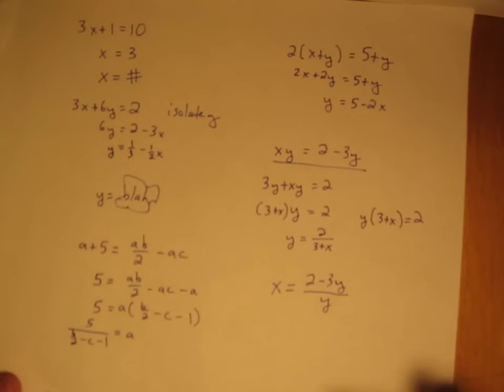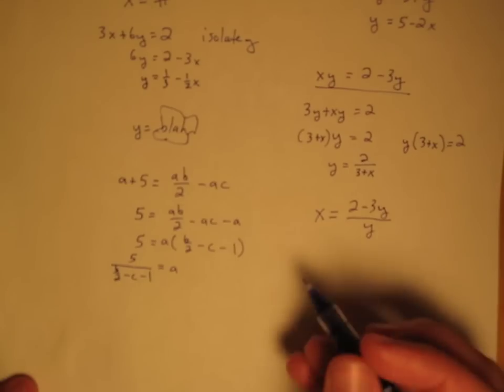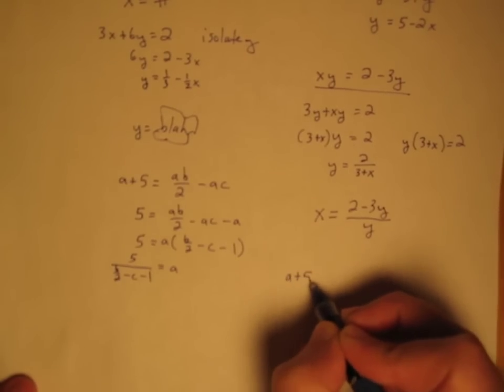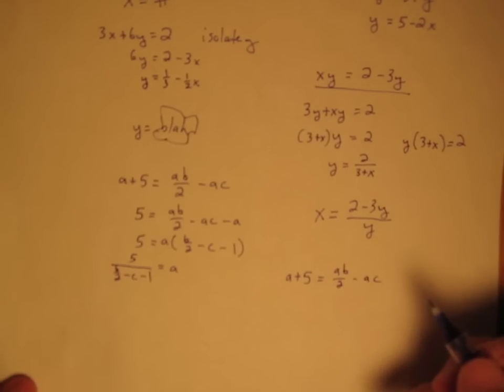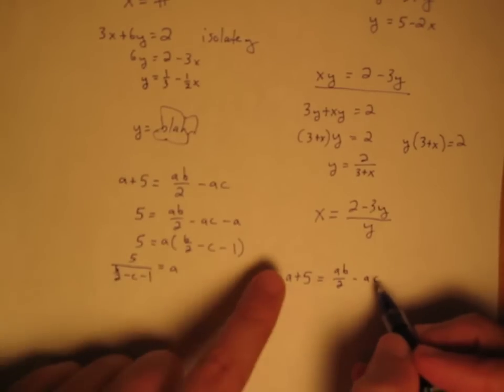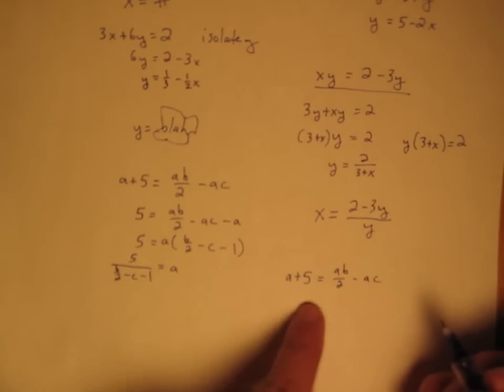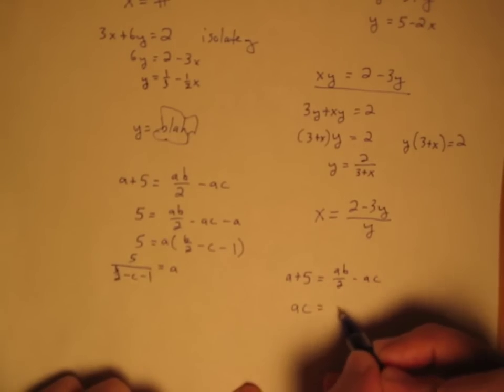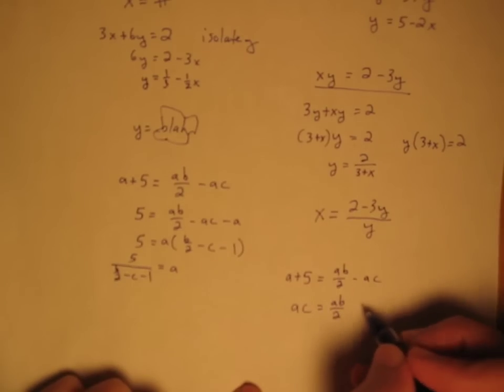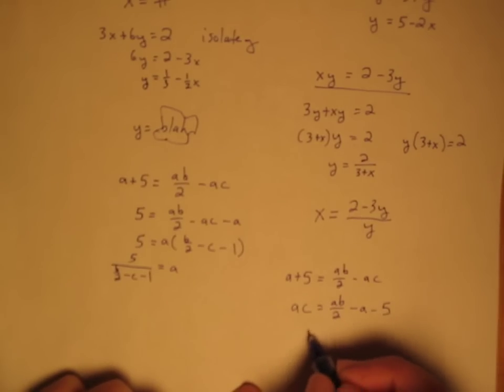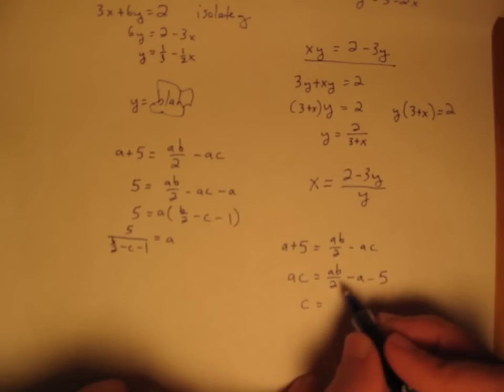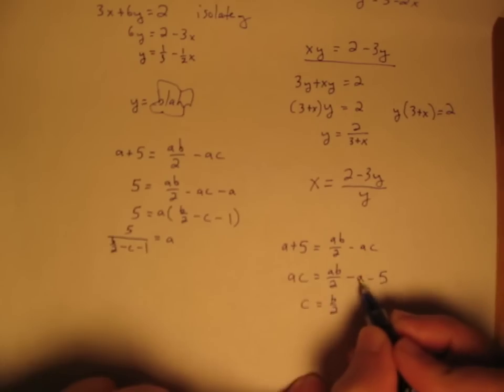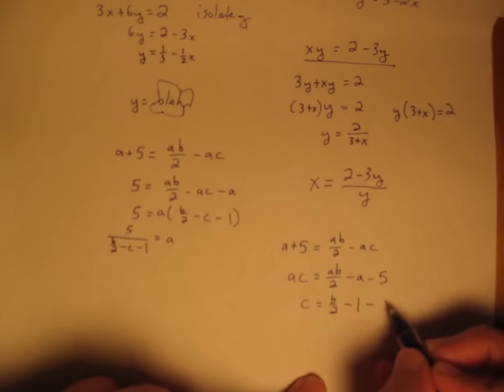Or here, we could solve for c instead. To do that, we would have our original thing, a plus 5 equals ab over 2 minus ac. And solving for c, I'll do this little song and dance just to get things positive. I'll bring that over there and this over here. So ac equals ab over 2 minus a minus 5. And so c equals all of this divided by a. I'll do it term by term. So this divided by a is b over 2, this divided by a is 1, and this divided by a is 5 over a.